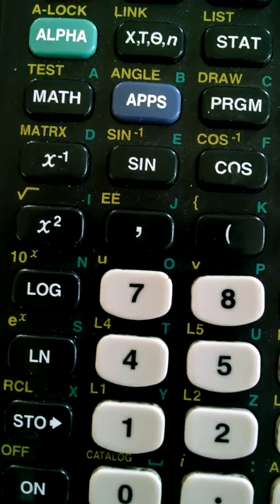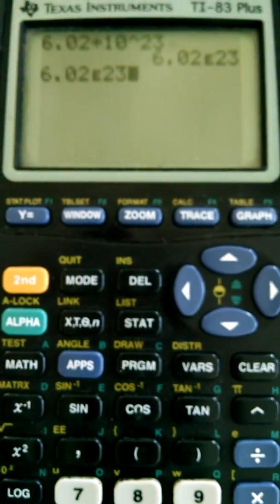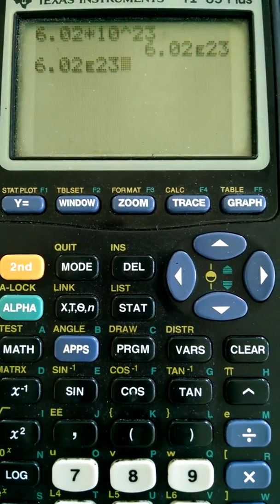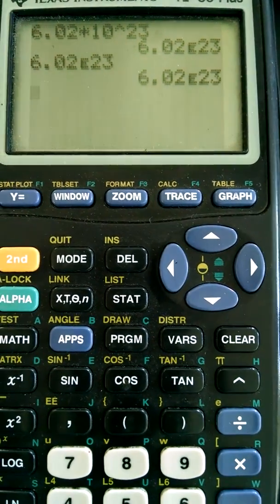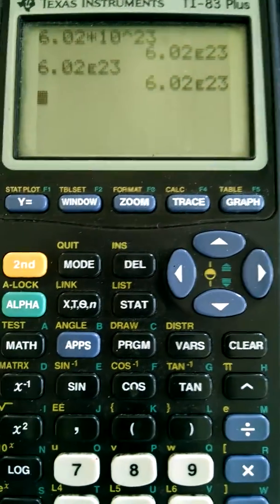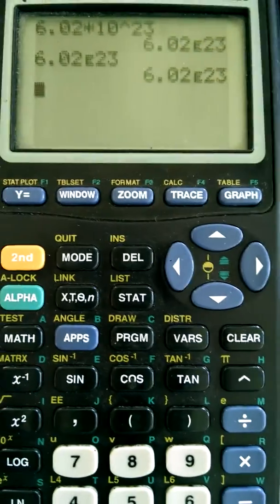I know, again, it says double E, but only one shows up, which is fine. Don't input two of them. So if you hit enter, note the answer is the exact same. Nothing is different.